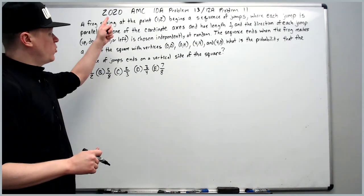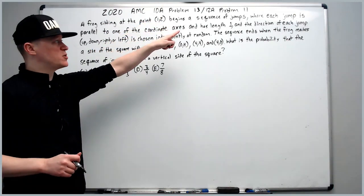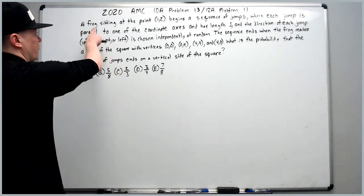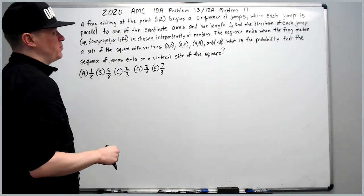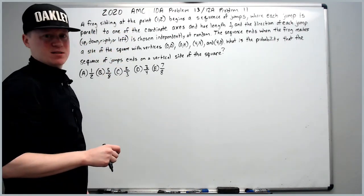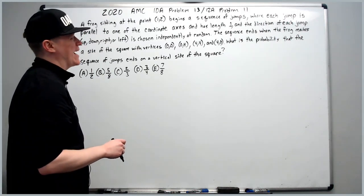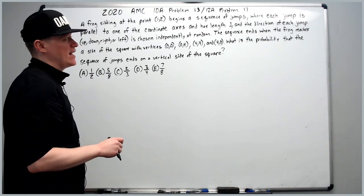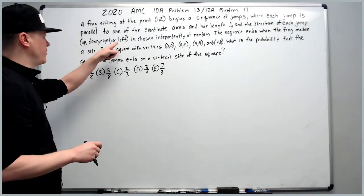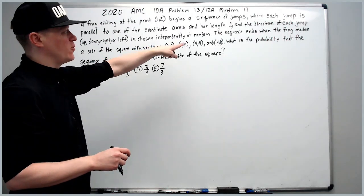Continuing on with the 2020 10A problem 13, which was also the 12A problem 11. A frog sitting at the point (1,2) begins a sequence of jumps where each jump is parallel to one of the coordinate axes and has length one, and the direction of each jump — up, down, right, or left — is chosen independently at random.